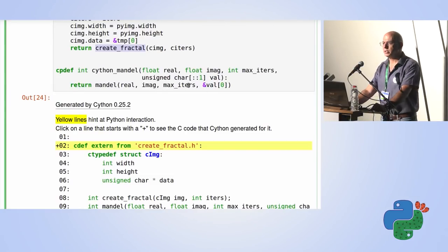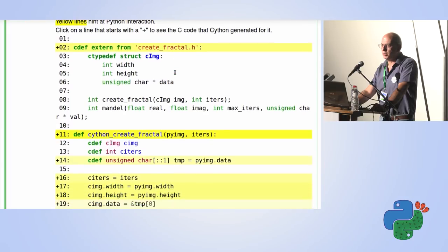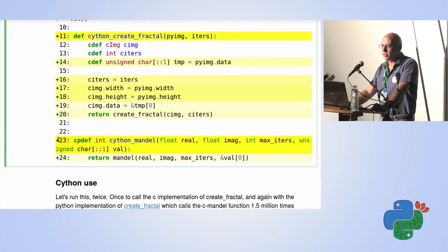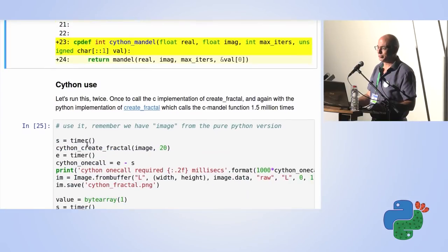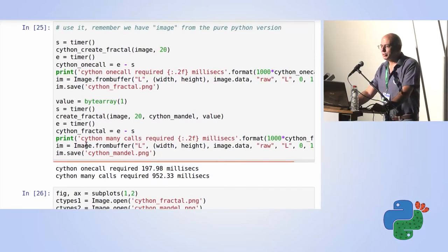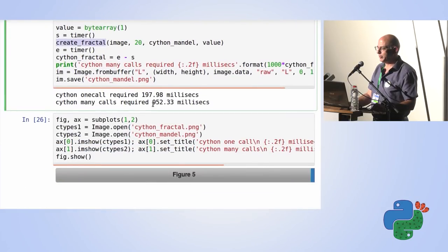One nice thing Cython inside Jupyter notebook does is show you where it's creating lots of C API calls to translate your Cython into what will compile into the C module — so you can see where your code is slow. If you have a lot of bright yellow lines, you know you've got a lot of C code behind there that you need to clean up. We can see that our functions here, the only starred parts are the function calls themselves. We call Cython create_fractal and the 1.5 million call version and time them — Cython is a bit better than C-types and CFFI.